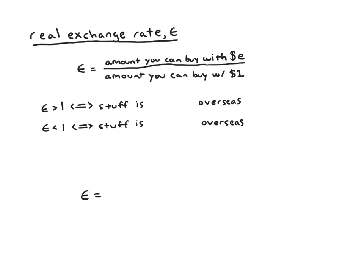An easy way to think of the real exchange rate is as a measure of how much stuff you can buy in one country versus another with the same amount of money. An intuitive definition is the amount of stuff you can buy in a foreign country with e dollars - if you took one dollar, converted it at the nominal exchange rate, you'd have e dollars, and then you'd see how much stuff you could buy - divided by the amount of stuff you can buy in the US with one dollar.